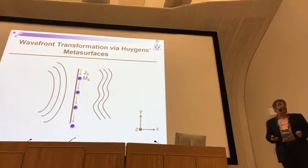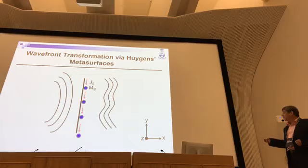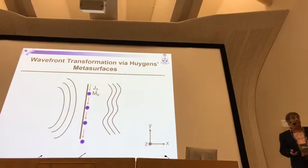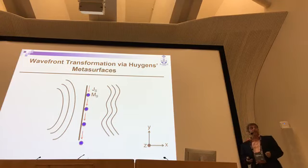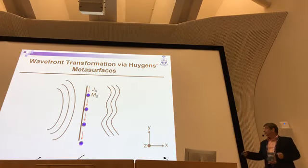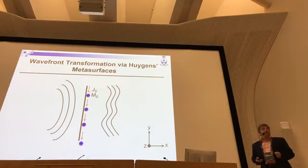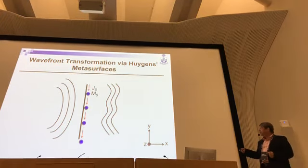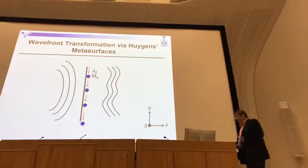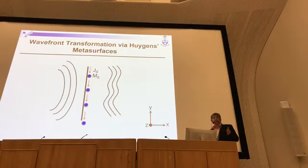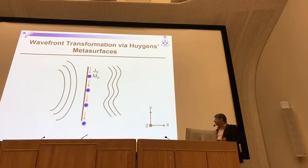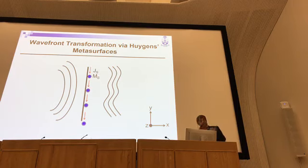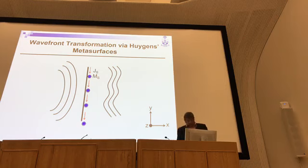We have an incident wavefront and we want to transform it to something desirable. This can be achieved by a surface which induces, due to the incident wave, the right electric and magnetic currents which typically are orthogonal to each other to perform this transformation. The question is how you design such surfaces and how you design them to remain lossless and passive.